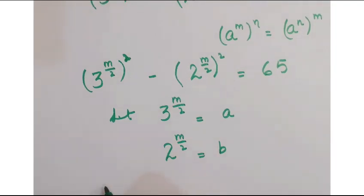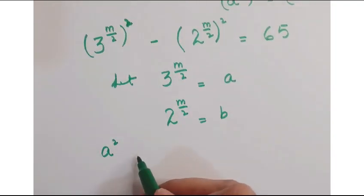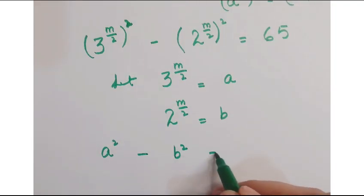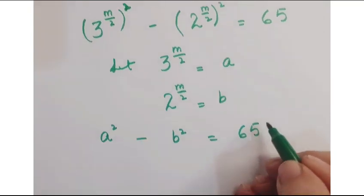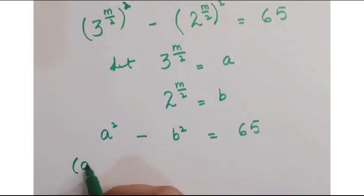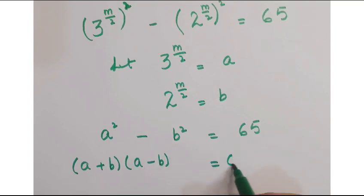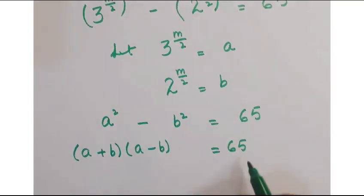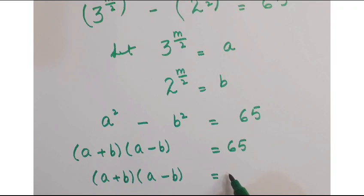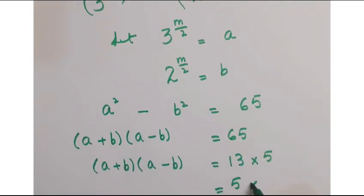Now, substituting these assumptions, we will write here a square minus b square is equal to 65. Now, this is an algebraic identity which can be expanded as a plus b into a minus b is equal to 65. Now, breaking this 65 into its prime factors that is 13 into 5 and 5 into 13.